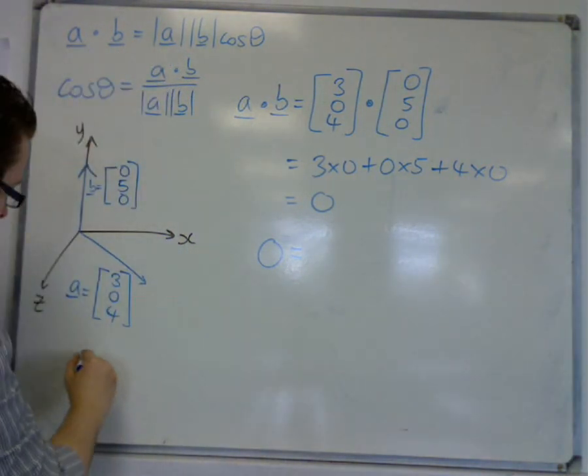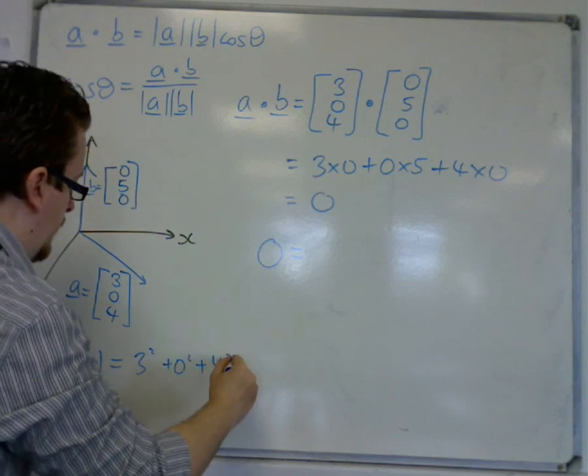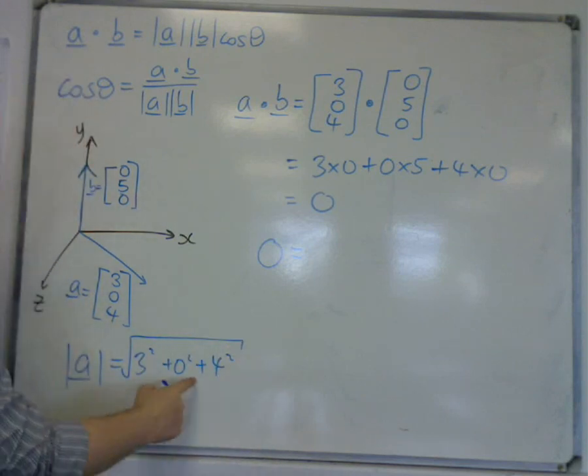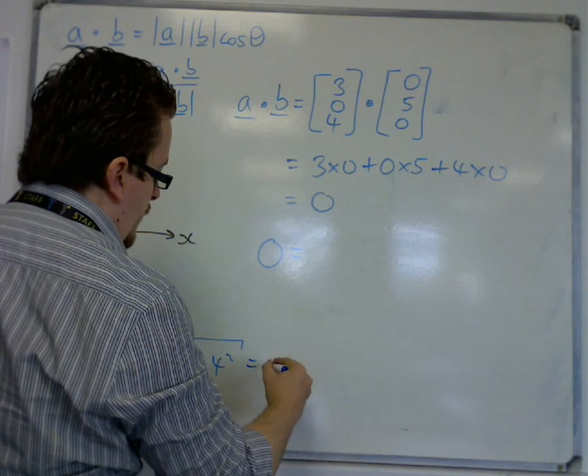Mod a is 3 squared plus 0 squared plus 4 squared. So that's 9 plus 16, so that's 25 square root of, so that's 5.